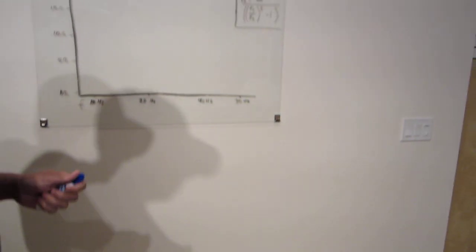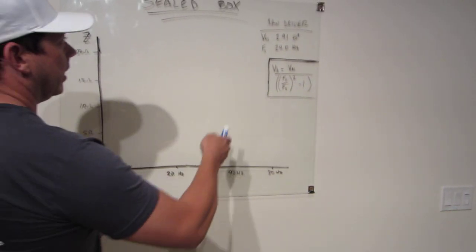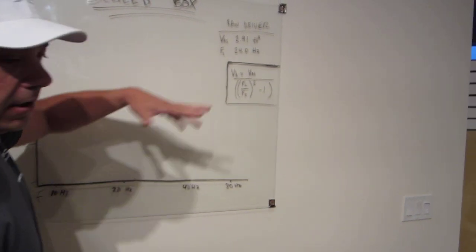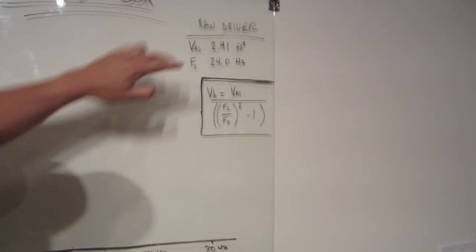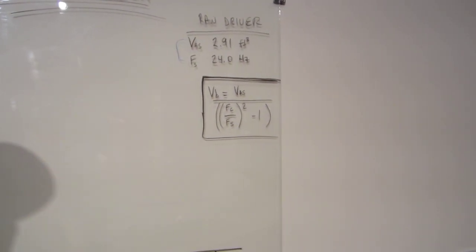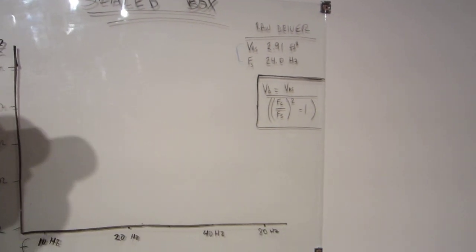First thing you have to do is measure all the Thiele Small parameters of the driver itself, which we've already done. And from those TS parameters, there's two parameters that we're going to have to use for our equations here, and that's these two. So, we've already measured the parameters for our driver, and this is what they measured. We did that on the IMSG as well, and we went over that in the first video.